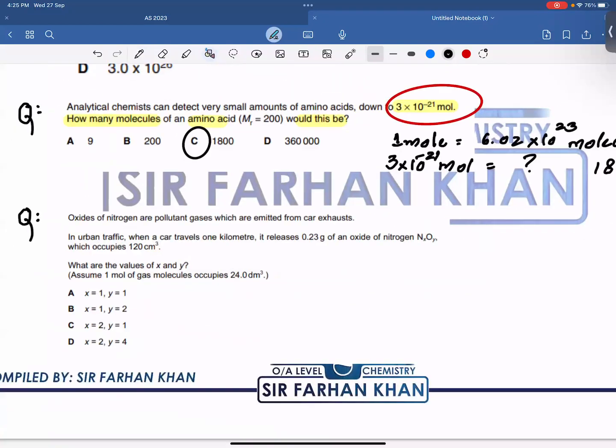Now in the next question, which is going to be tricky obviously. Alert rehna. Oxides of nitrogen are pollutant gases which are emitted from car exhaust. In urban traffic, when a car travels 1 kilometer, it releases 0.23 gram of an oxide of nitrogen which occupies 120 cm³. What are the values of X and Y? And they also said that one mole of gas occupies a volume of 24 dm³. So guys, that's very straightforward information. Ke mujhe volume given hai. Mujhe molar volume bhi given hai. Me in dono ko divide karke moles of gas find out kar leta hoon. So I know the volume. And I know the mass. So I can use these two values to get the answer.